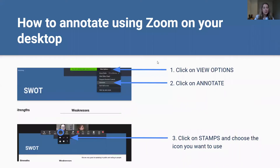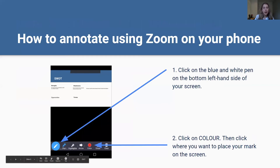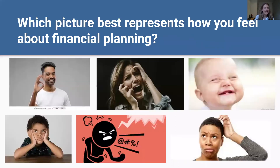Before we dive into that content, I thought it would be fun to begin with a little icebreaker game so I can understand a bit more about how you're all feeling about financial planning. To do that you will need to annotate the screen. If you're accessing this webinar on your computer, just click on view options, then click on annotate, and then you can select a stamp to mark the screen. Here are some different pictures — please annotate the screen. Which of these photos best represents how you feel about the topic of financial planning?